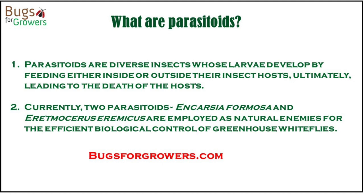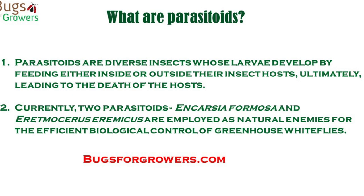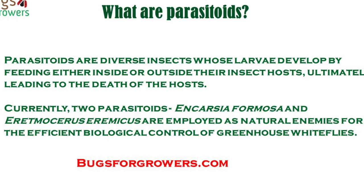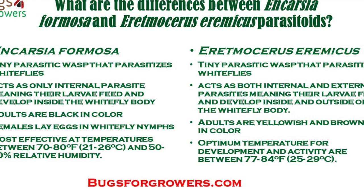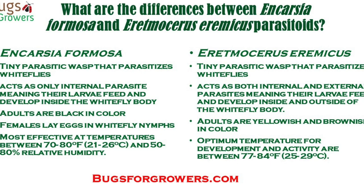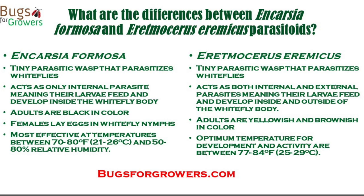Currently, commercially available parasitoids including Encarsia formosa and Eretmocerus eremicus are used as effective biocontrol agents for controlling greenhouse whiteflies. Although both parasitoids can parasitize whiteflies, Encarsia wasps feed only internally on nymphs whereas Eretmocerus wasps feed both externally and internally on whitefly nymphs.